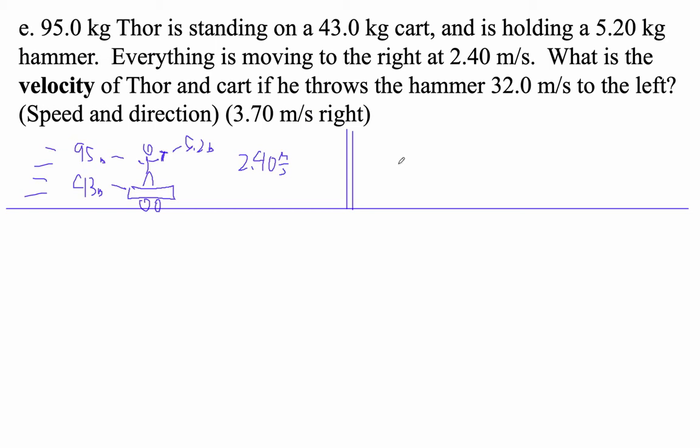And then he throws the hammer to the left. So let's draw a picture of this hammer flying through the air to the left at 32 meters per second. So 32, but it's gonna be negative because it's to the left.